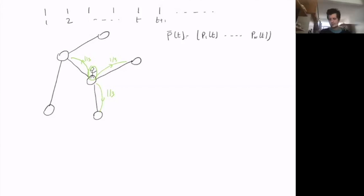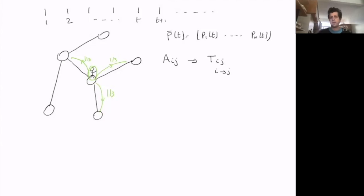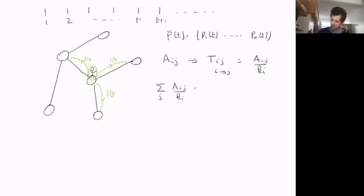Random walks on networks are mathematically completely equivalent to Markov chains. Instead of nodes and links, a Markov chain has states and transition probabilities. The transition matrix entry T_ij — the probability of going from state i to state j in one step — equals A_ij divided by k_i. The sum over all outgoing links gives k_i / k_i = 1, naturally implementing conservation of probability.